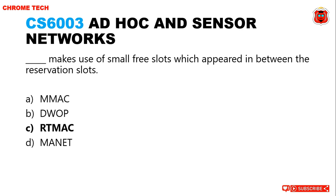Hello everyone. HADOC and Sensor Network. First question: what makes use of small free slots which appeared in between the reservation slots? Option C, RT-MIC is the answer.